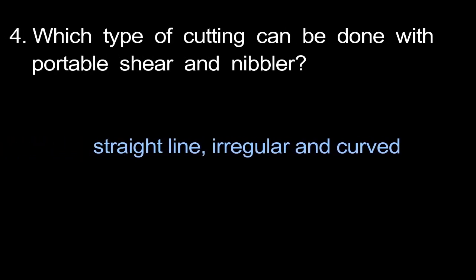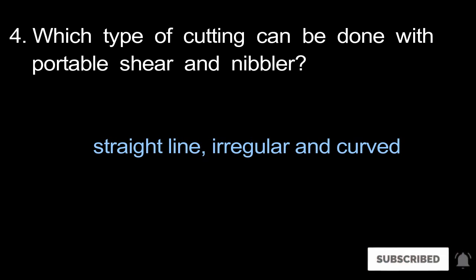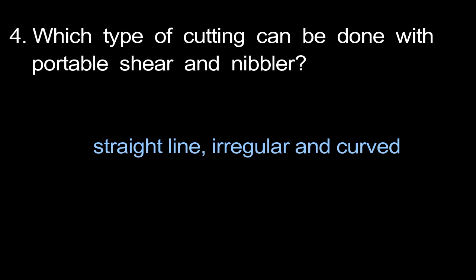Question 4: Which types of cutting can be done with a portable shearing machine and nibbler? You can cut straight lines and irregular lines with the sheet.